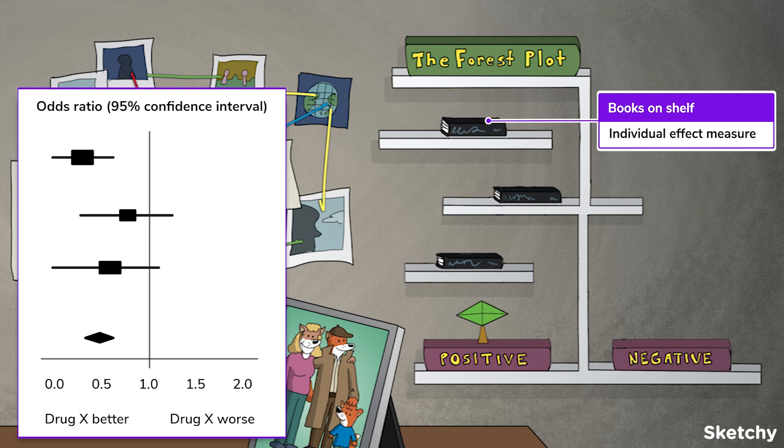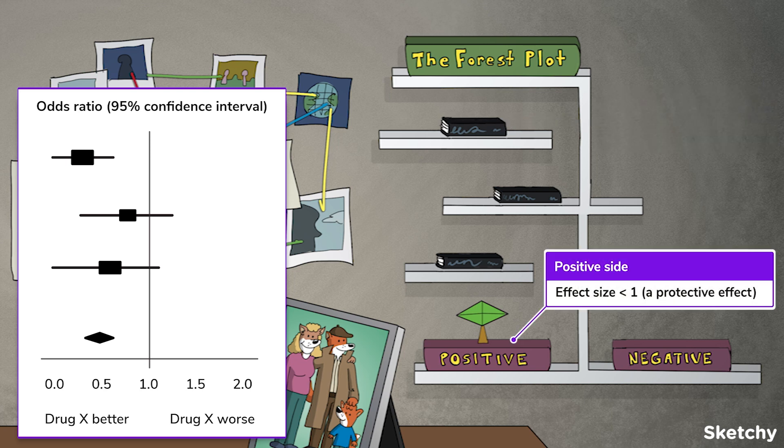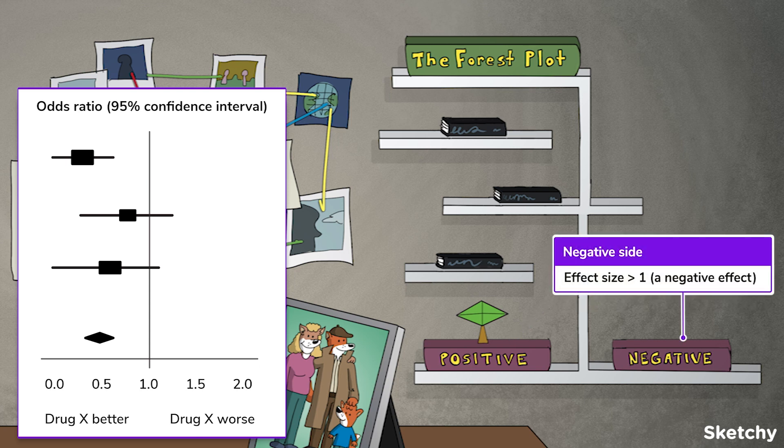So let's talk about what's going on on either side of the null line. Suppose you're trying to determine if drug X is a better drug. Notice how we've got a positive side of the stack and a negative side of the stack? Well, the effect measure can be less than 1, suggesting a protective effect, or positive effect, or greater than 1, which can suggest that drug X is actually worse than the comparator, and potentially even harmful, i.e. a negative effect.